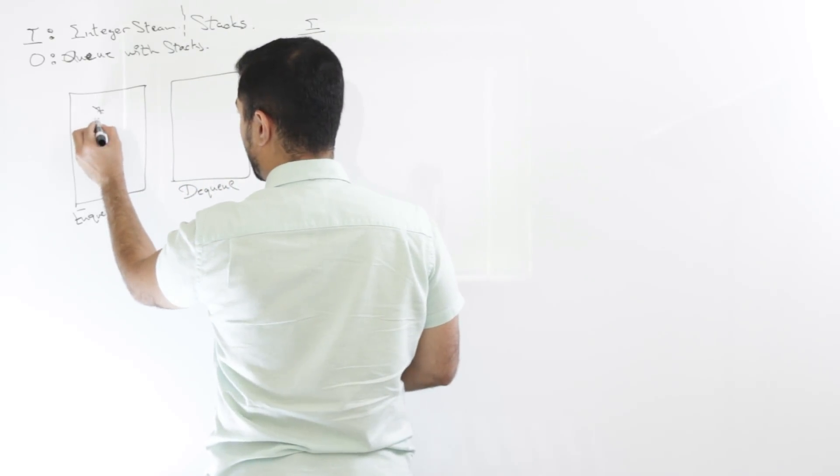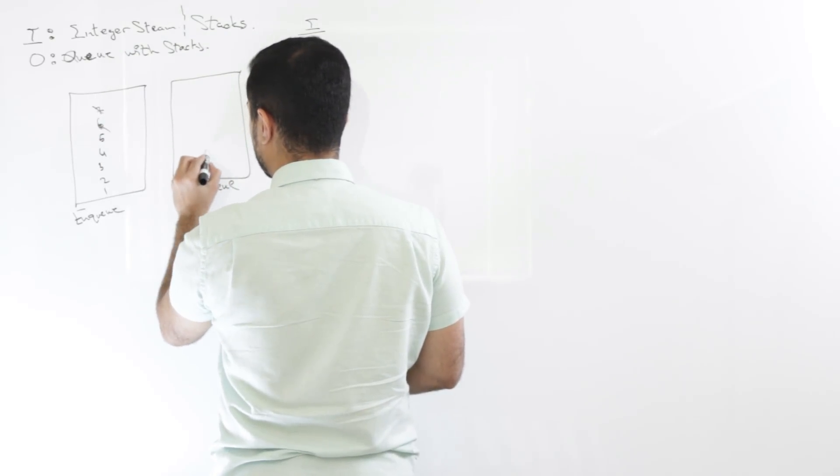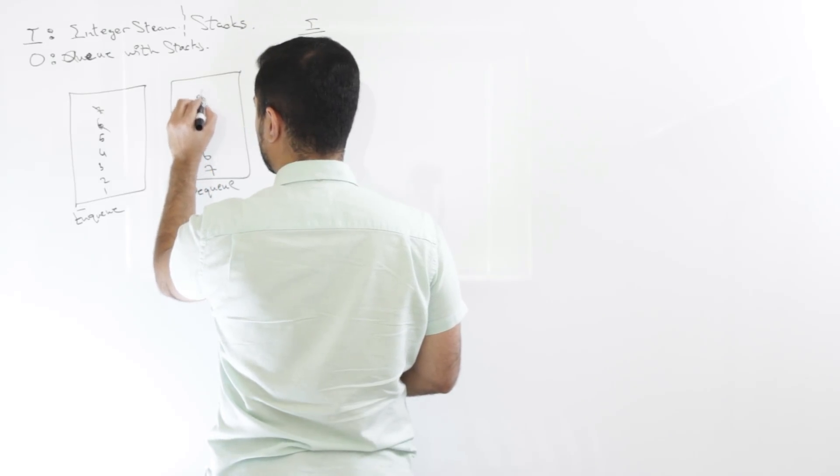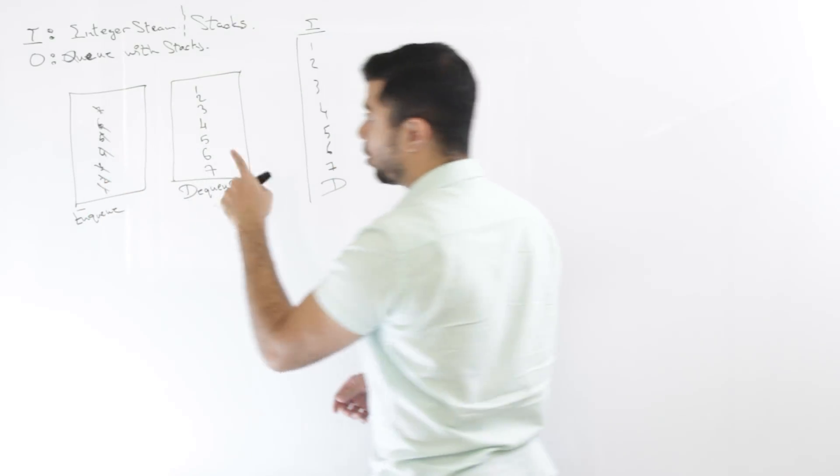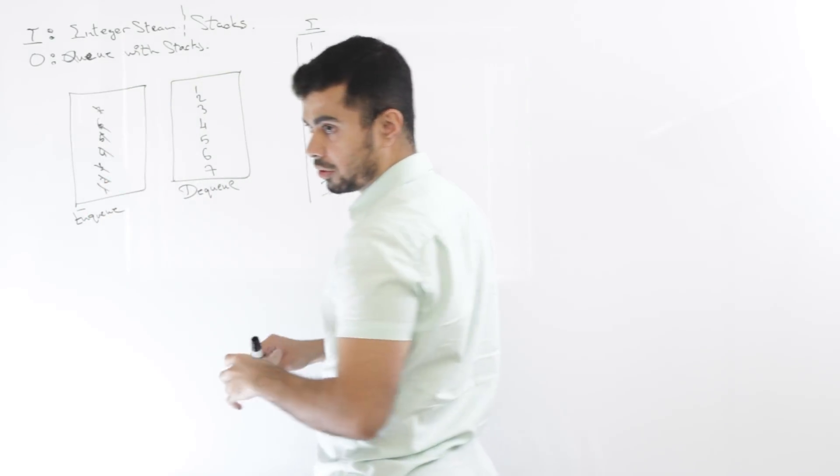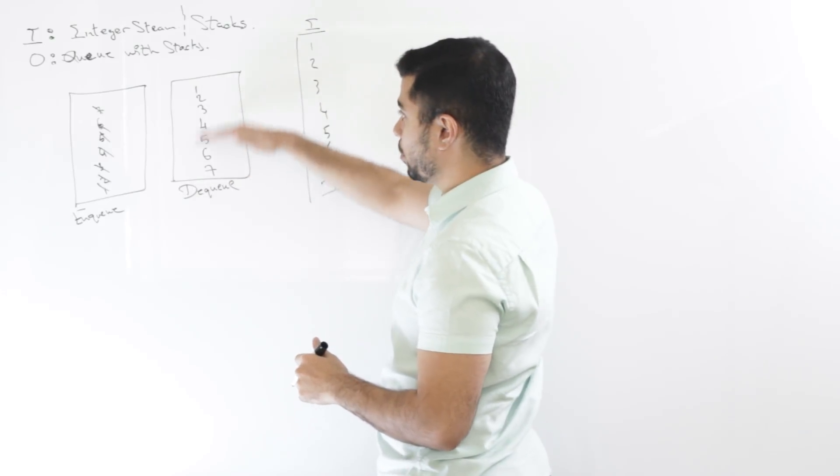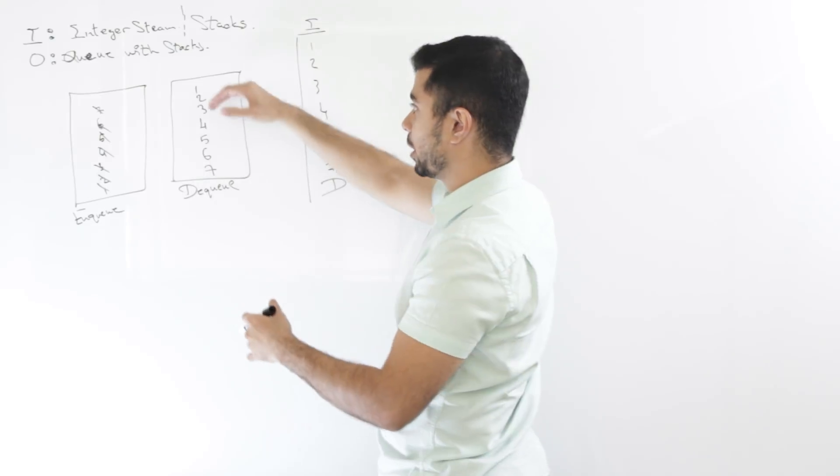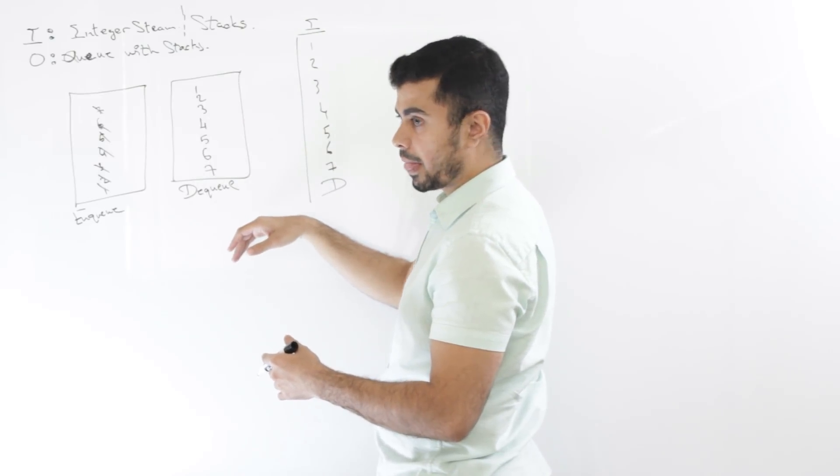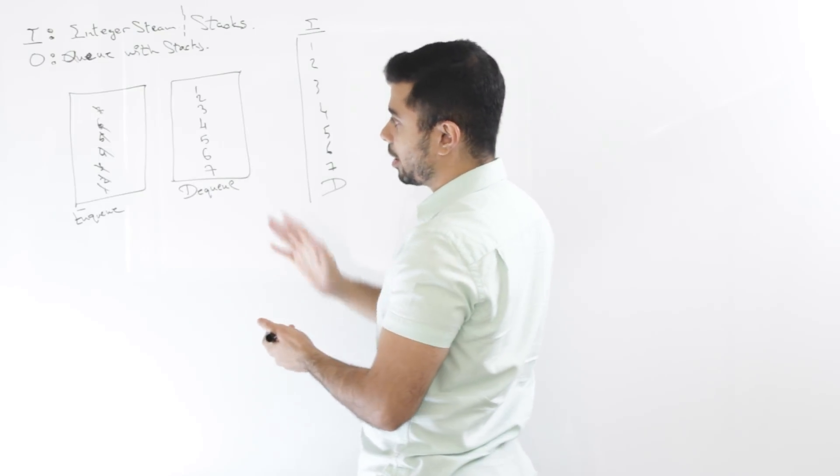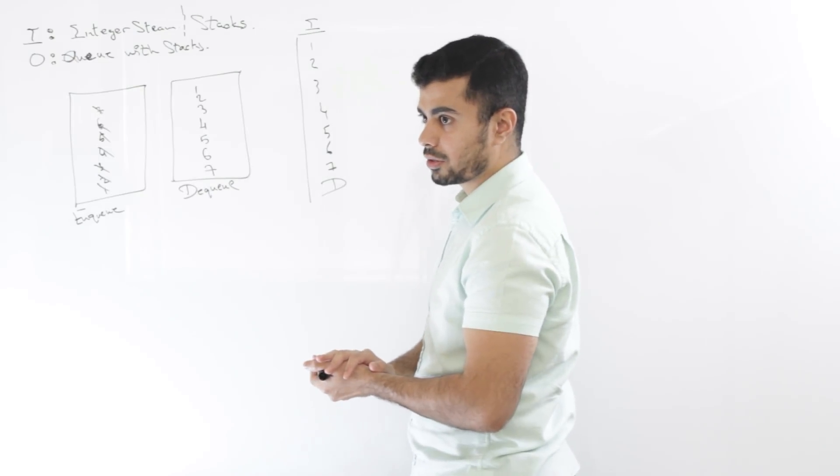But if there isn't, then you pop everything out from here and you push it into dequeue. So basically as you pop these out, you'll have 7, 6, 5, 4, 3, 2, and 1. So you have to pop all of them out. So for each dequeue command, basically you need to empty the enqueue stack. So now you will see that this is, like when we're dequeuing, this mimics a queue. So using these two stacks, I would go about implementing it this way.